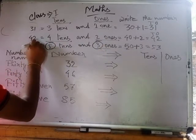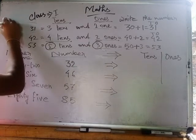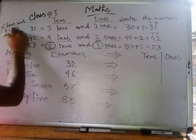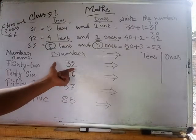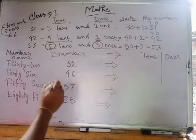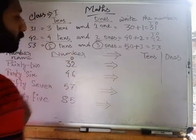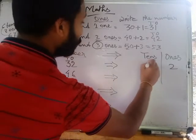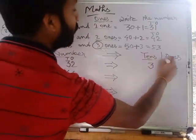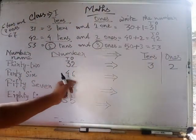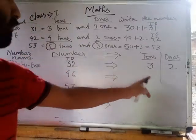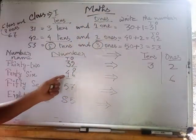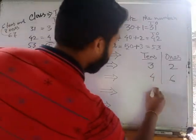Five tens and three ones is 53. If it is six tens and seven ones, that means it is 67. Do you understand? For a given number, how to write the tens and ones: for 32, two is at the place of ones so we write 2, and three is at the place of tens so we write 3. If it is 46, six is at the ones place and four is at the tens place.